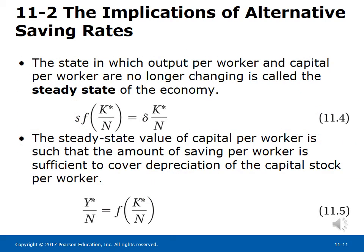The state in which output per worker and capital per worker are no longer changing is called the steady state of the economy. The steady-state value of capital per worker is such that saving per worker is sufficient to cover depreciation of the capital stock per worker, as shown by equation 11.4. The steady-state output per worker Y*/N is given by the production function in equation 11.5.